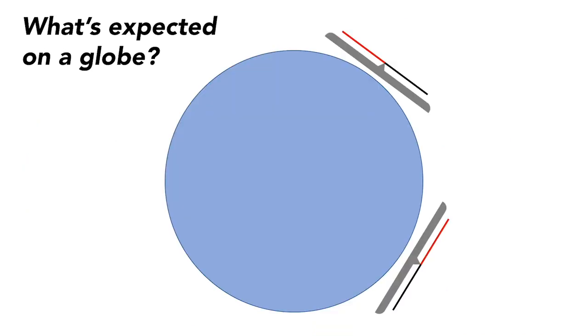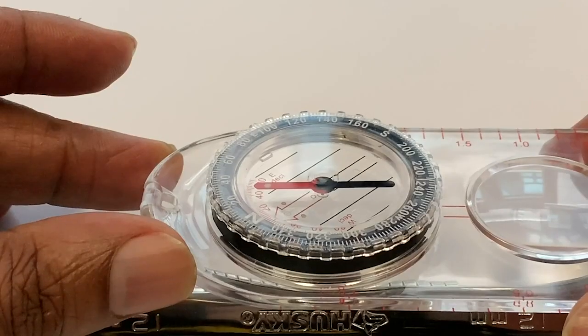So the needle will point in line with the lines of magnetism, pointing up in the south and down in the north. Like this.